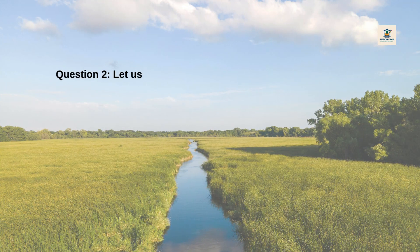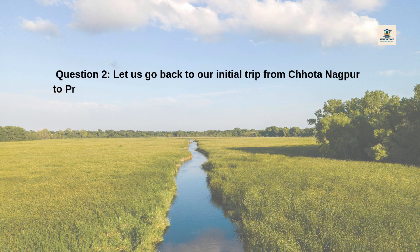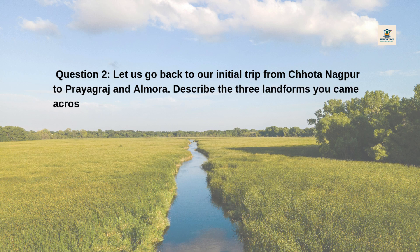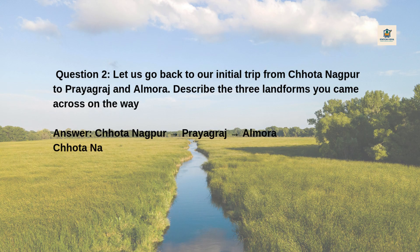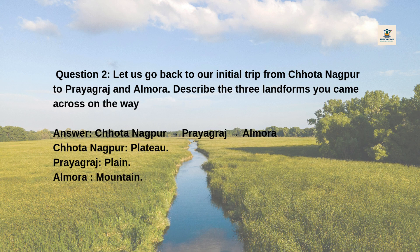Question 2: Going back to our initial trip from Chota Nagpur to Prayagraj to Almora, describe the three landforms you came across on the way. Answer: Chota Nagpur — plateau; Prayagraj — plain; Almora — mountain.